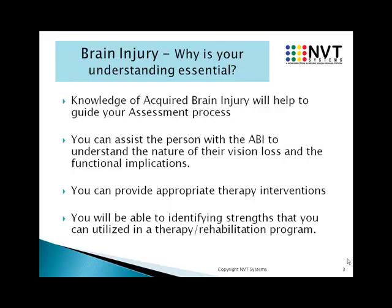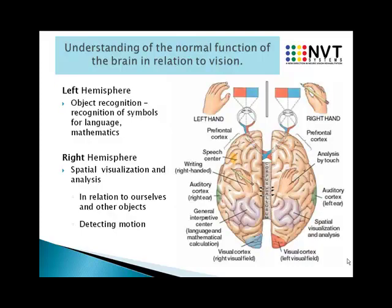The aim is to provide an appropriate therapy intervention using the person's strengths. In the next few slides, I will give you a sample of the type of material covered in the course. Firstly, there is a comprehensive understanding of normal brain function and how that relates to visual processing.